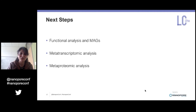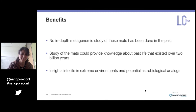Even more fascinating than metagenomics is metatranscriptomics — RNA-seq obtained using a MinION — which will tell us what could actually be happening in these communities, not just what the potential is. And building on that, metaproteomic analysis can even provide a better picture of what the community is succeeding in accomplishing. This will definitely paint the most complete picture of these mats that have ever been painted. Brand new information to science.